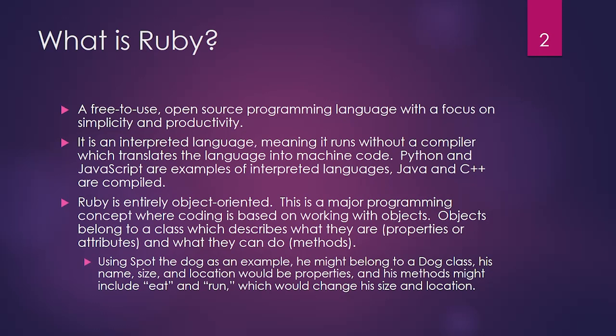It's an interpreted language, which means it runs without a compiler. A compiler is something that changes programming code into machine code. Other examples of interpreted languages would be Python and JavaScript, while Java and C++ are languages that need to be compiled first. So basically, today we're going to be writing Ruby files and then executing them, whereas with Java you'd create Java files and then turn them into binary files first. So we get to skip that step — and if none of that means anything to you, don't worry about it.